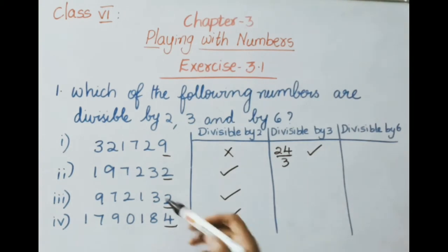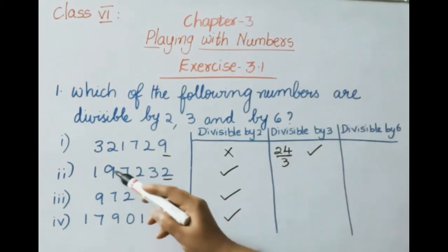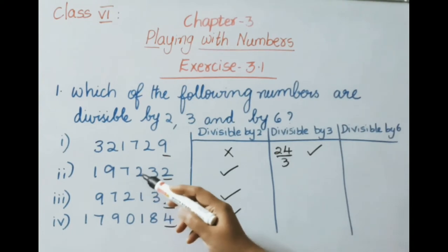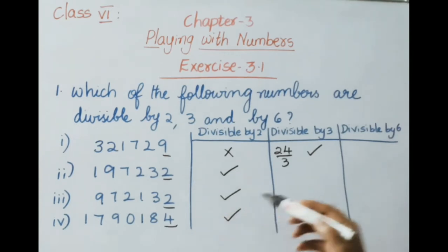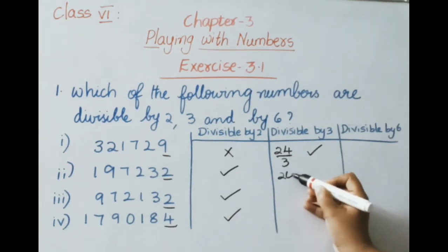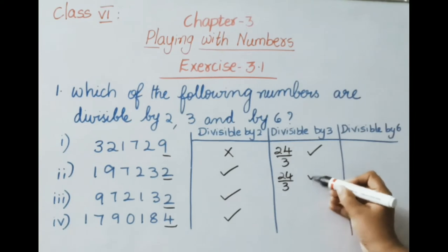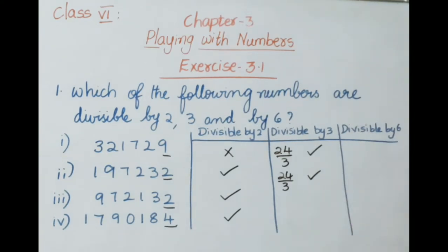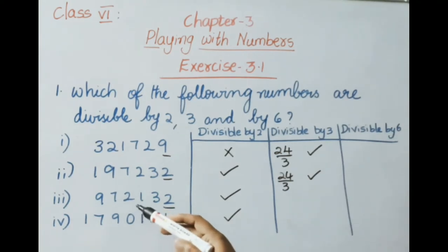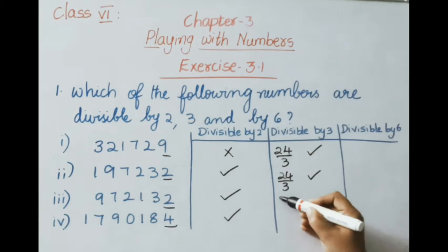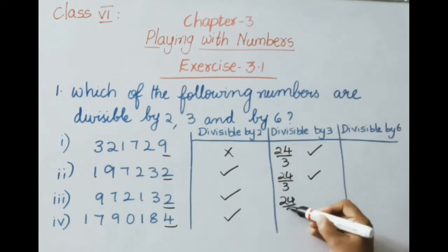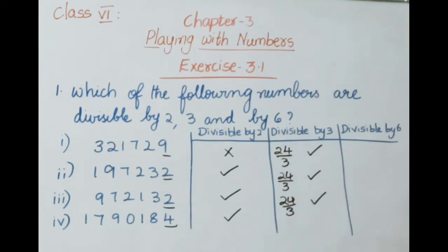For 1,97,232: 1+9+7+2+3+2 = 24, which is divisible by 3, so the given number is divisible by 3. For 17,90,184: 1+7+9+0+1+8+4 = 30, which is divisible by 3, so this number is also divisible by 3.